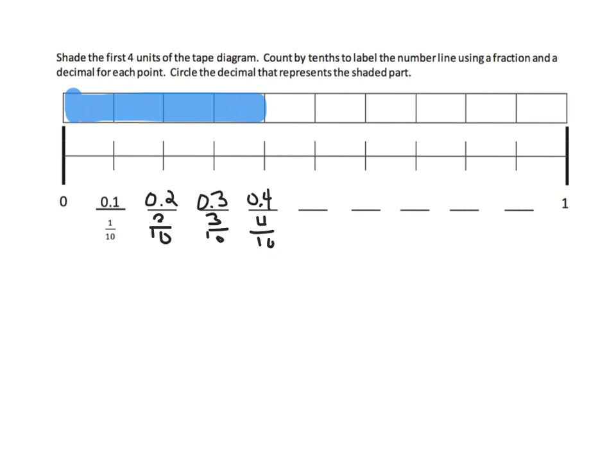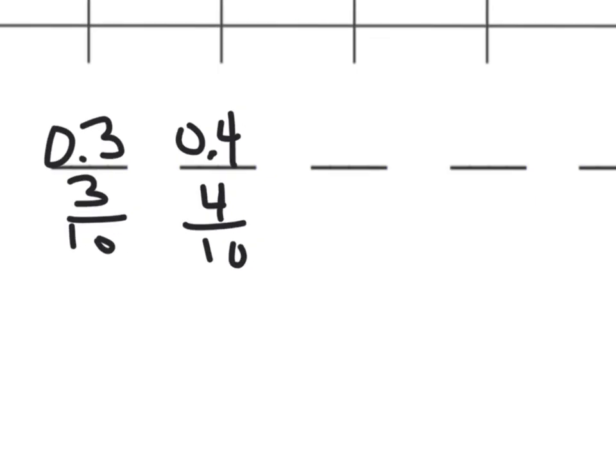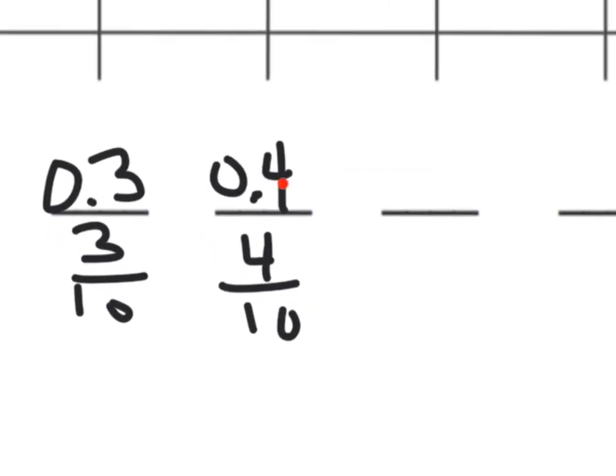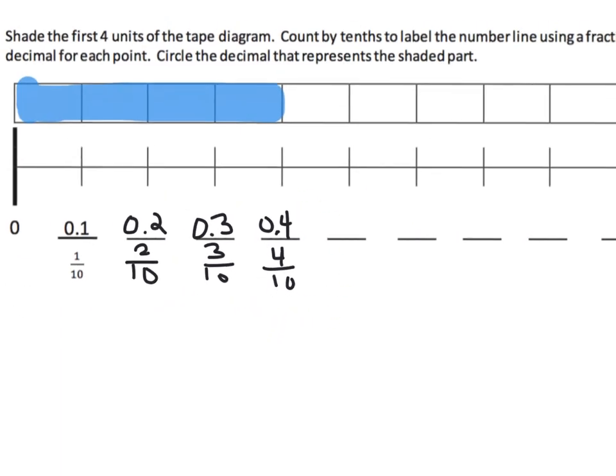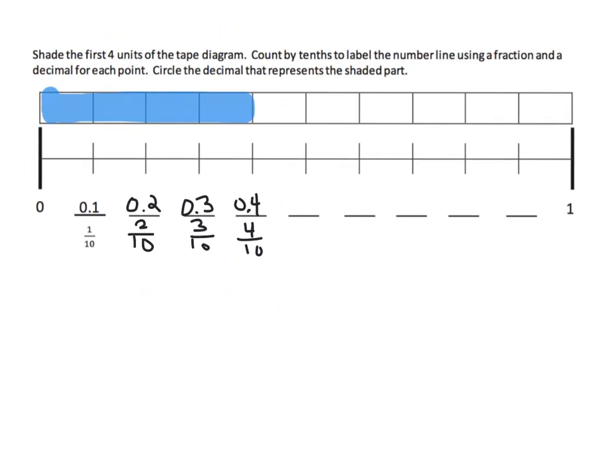We want students to be able to look at this decimal—for example, four tenths—and recognize that four tenths, 0.4, and saying four tenths are synonymous. When we say 0.4 and when we say four tenths, they are equivalent—they are the same value.